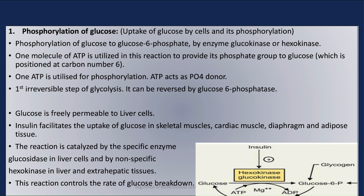Glucose is freely permeable to liver cells. Insulin facilitates the uptake of glucose in skeletal muscles, cardiac muscle, diaphragm, and adipose tissue. The reaction is catalyzed by a specific enzyme — glucokinase in liver cells, and by the nonspecific enzyme hexokinase in liver and extrahepatic tissues. This reaction controls the rate of glucose breakdown.